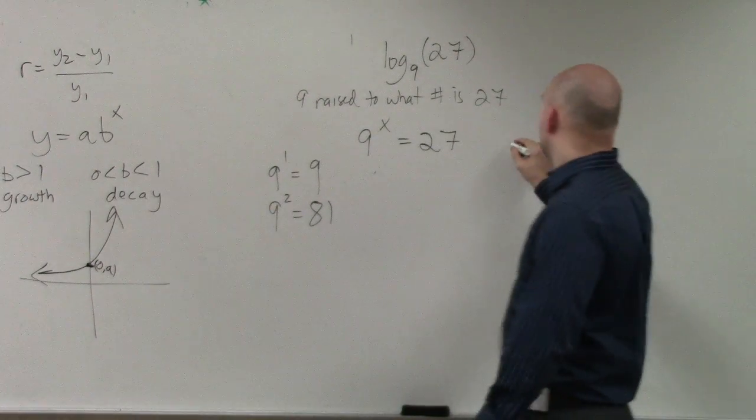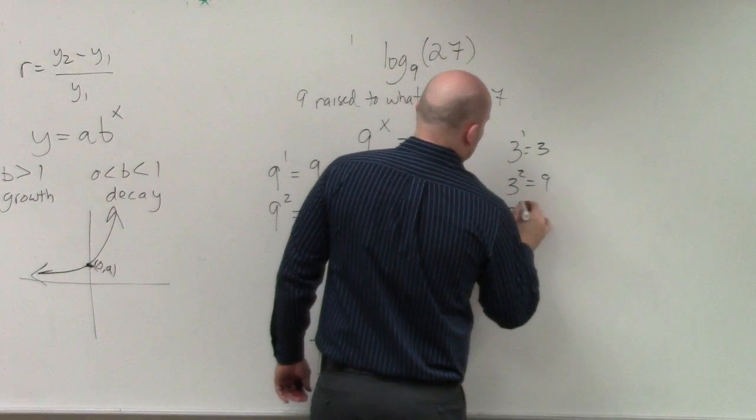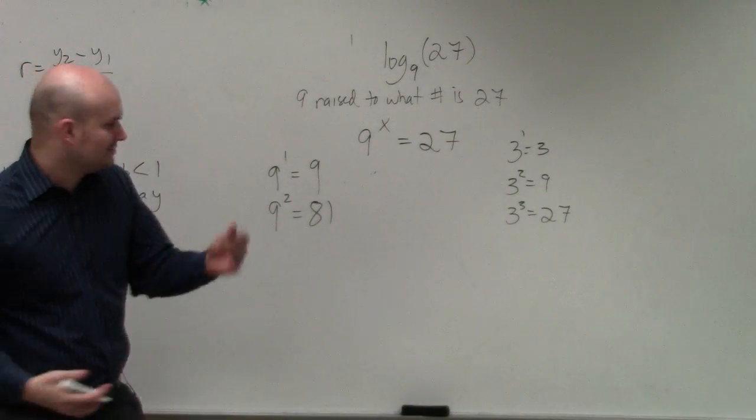3. 3 to the first power is 3, 3 squared is 9, 3 cubed is 27. You guys should be all familiar with these numbers, right? Because we've been doing all these radicals.